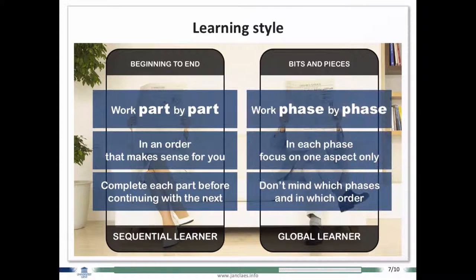For the global learners, they have to work phase by phase. For example, a phase can be work on the content first, the whole content. So make a content table, bullet points, write your text. And then in the next phase you will focus on formatting. For example, you will include bold types, etc. And then maybe the third phase is pictures. So you work phase by phase, not part by part. And each phase you focus on different aspects of what you're doing.